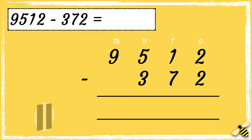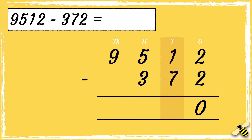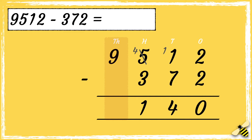First we subtract the ones: two take away two equals zero. Then we subtract the tens — we can't do one take away seven, so we need to exchange from the hundreds column. Now we have eleven take away seven equals four. Then we subtract the hundreds: four take away three equals one. And then we're left with nine thousands, so the answer is nine thousand one hundred and forty.